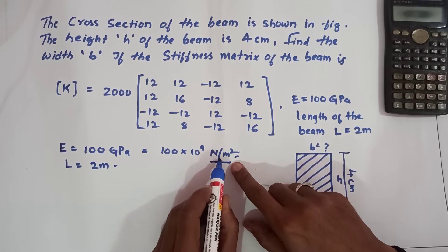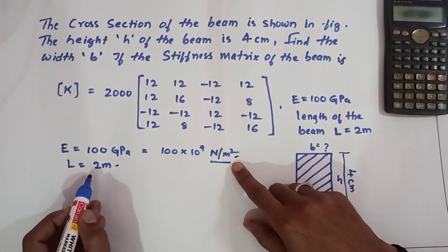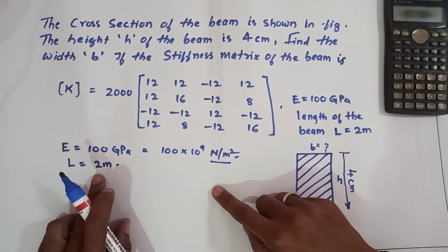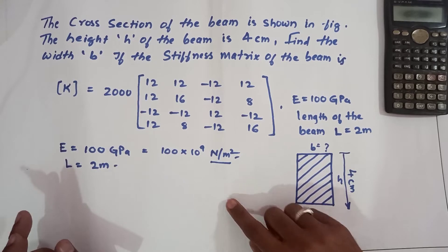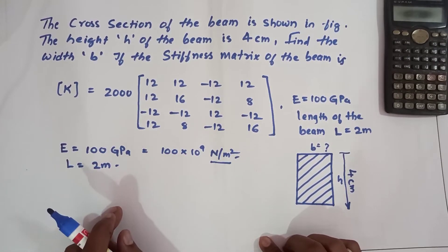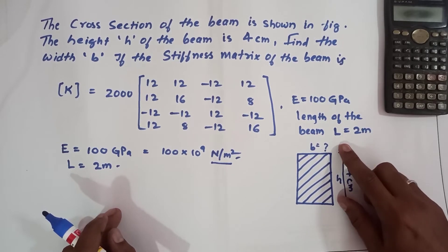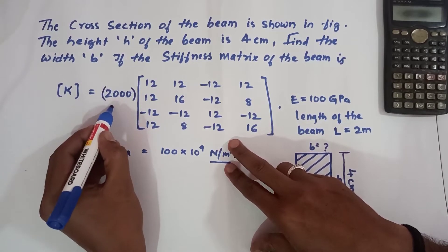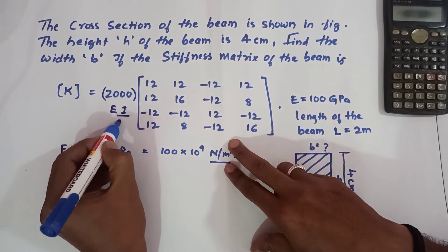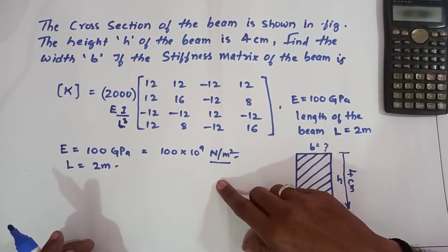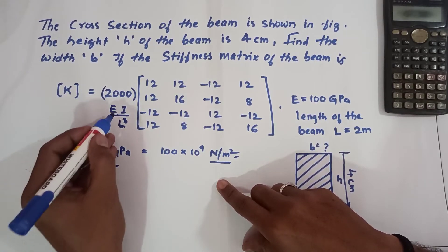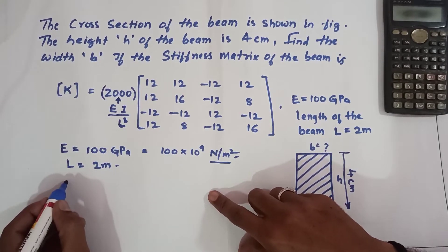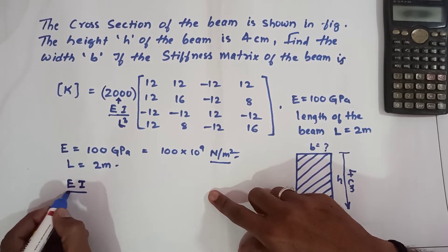If you want to work in millimeters, you have to convert the Young's modulus to Newton per millimeter squared and the length should be 2000 millimeters. Now, in the stiffness matrix, the value 2000 is mentioned. As per the beam element stiffness equation, this corresponds to EI/L³, so EI/L³ = 2000.